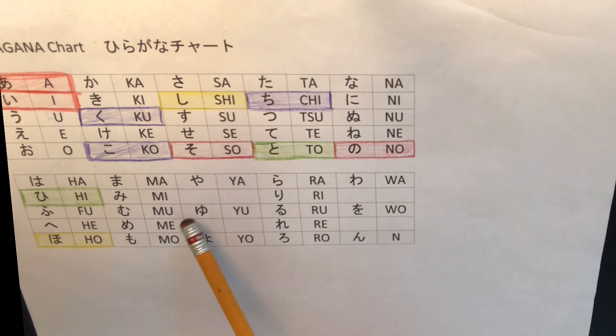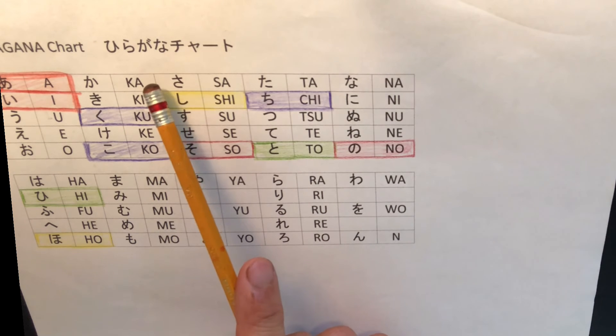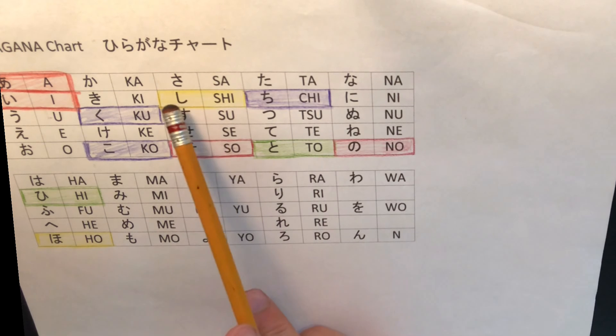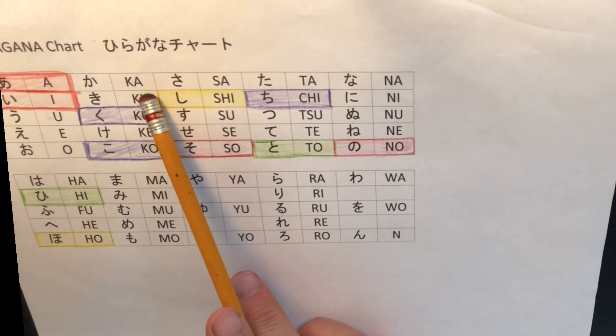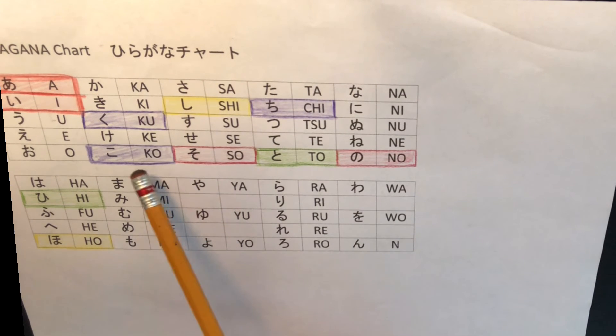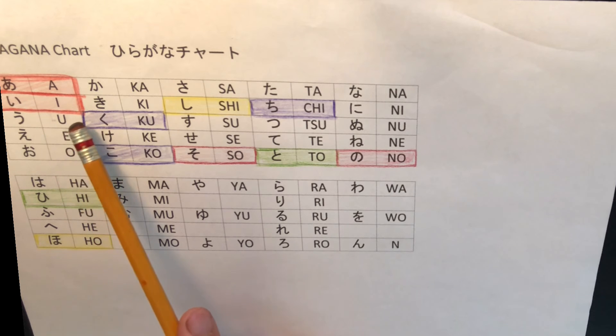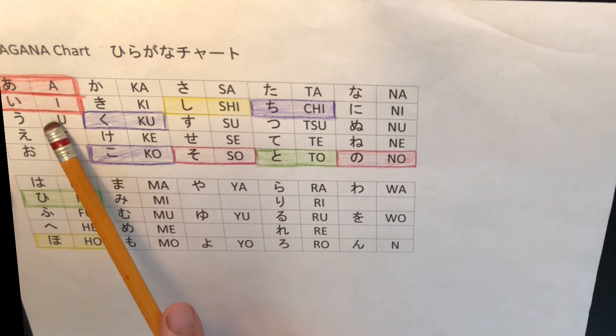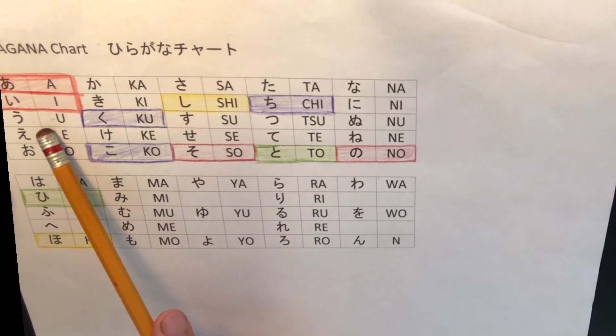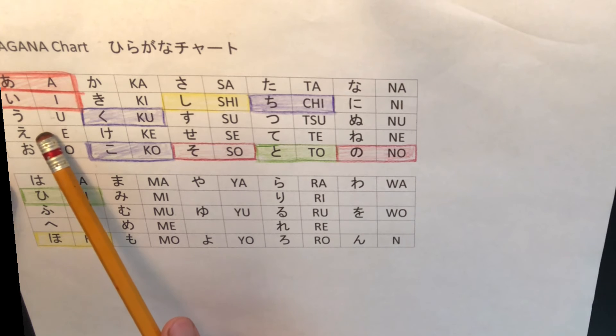So, ko is in the second vertical line. Ka ki ku ke ko. So, all first letter pronunciation is k sound. Ka ki ku ke ko. And the next i is the first vertical line. A i u e o. So, i, hiragana i. We learned already in the past video.